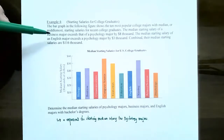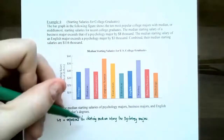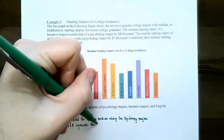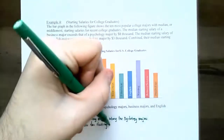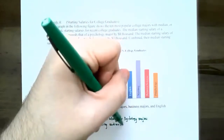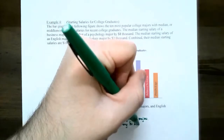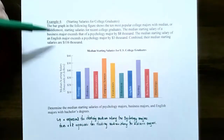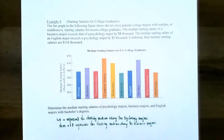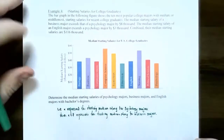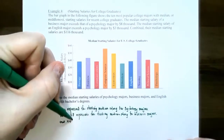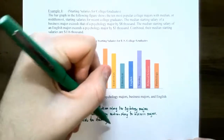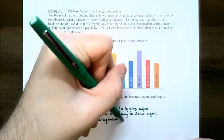The second step is to relate any unknowns back in terms of X. The business major exceeds psychology by $8,000, so business major salary is X plus 8 (in thousands). English majors exceeded psychology by $3,000, so in terms of X that would be X plus 3, representing the starting median salary for English majors.